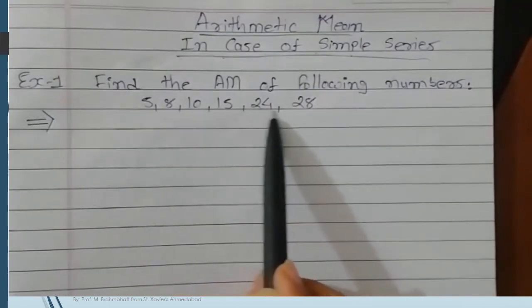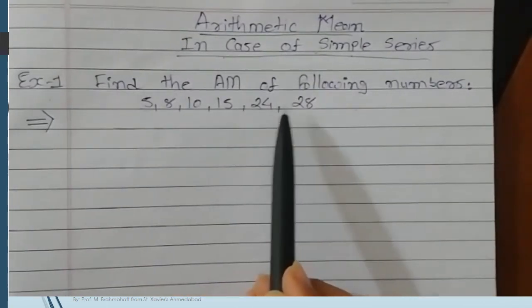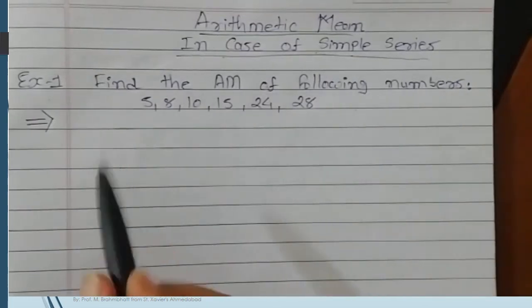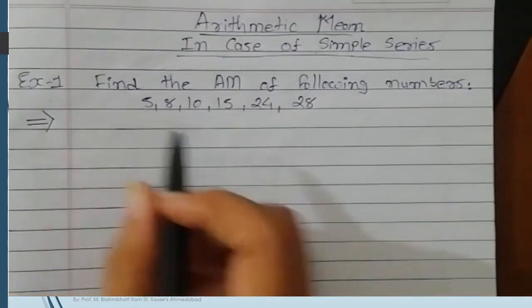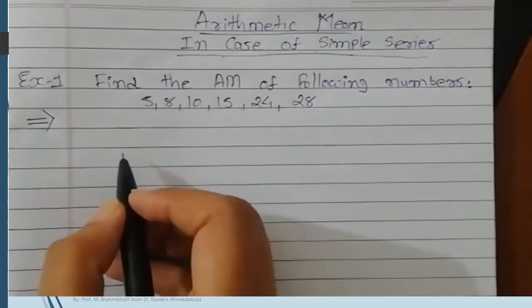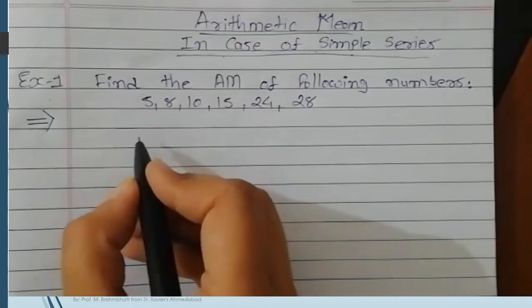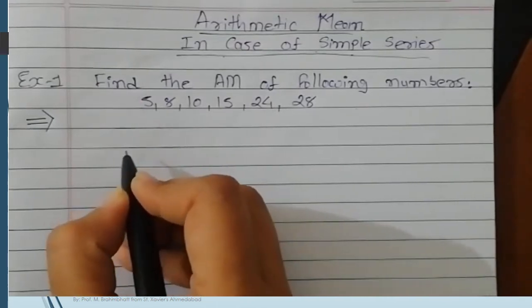Because only x values are given, this is the case, the pure case of the simple series. So for the simple series, we have to apply the formula of a simple series to find the AM.